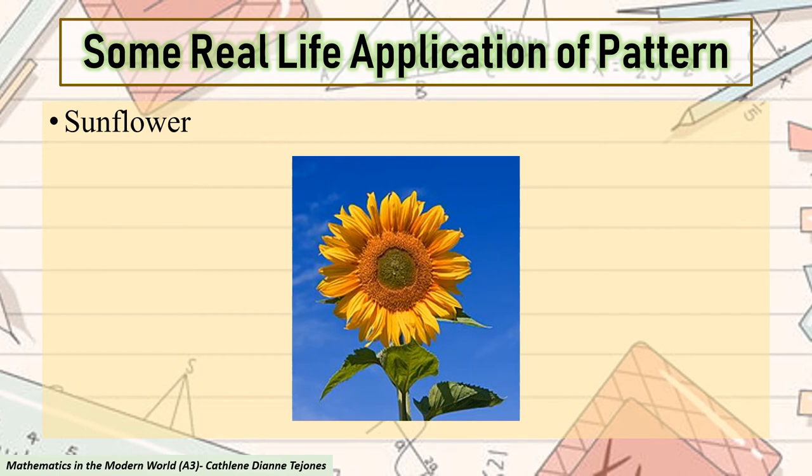We also have sunflowers. Looking at the sunflowers up close, you will notice that there is a definite pattern of clockwise and counterclockwise arcs or spirals extending outward from the center of the flower. This is another demonstration of how nature works to optimize the available space.